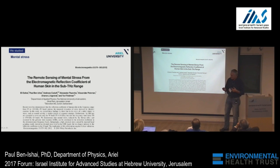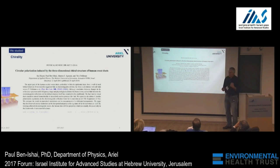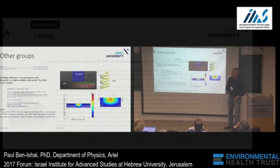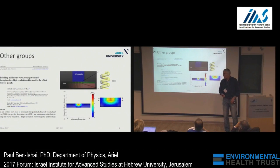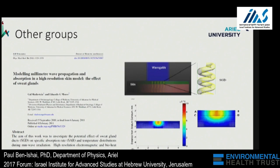We finally put the nail in the coffin in our opinion when we proved there was also chirality in the reflection coefficient. Shapiro/Shafferstein also came to the same conclusion and went one stage further — he actually looked at SAR rates as well. He did this because the American Army had commissioned him to explain why their 94 GHz crowd dispersal gun made people run away when the beam touched them.